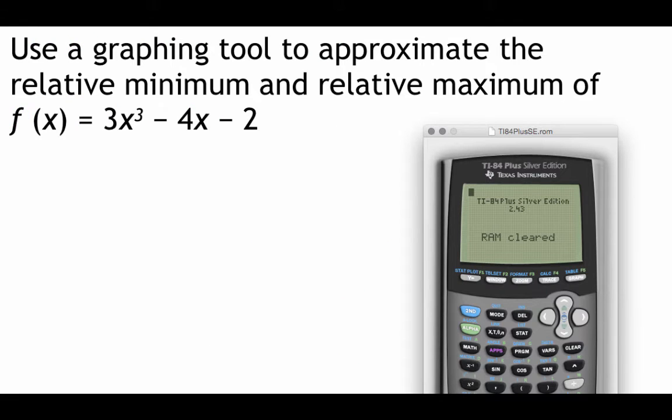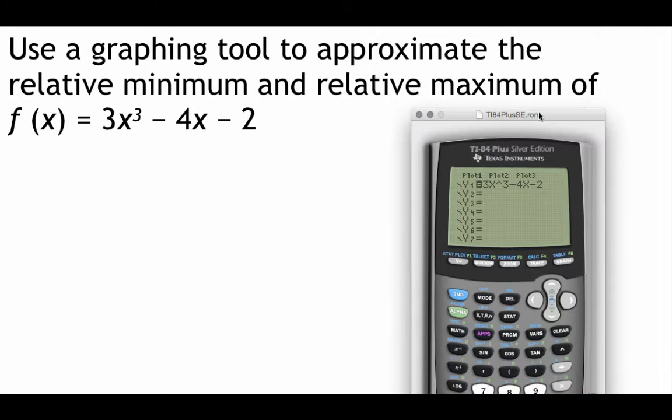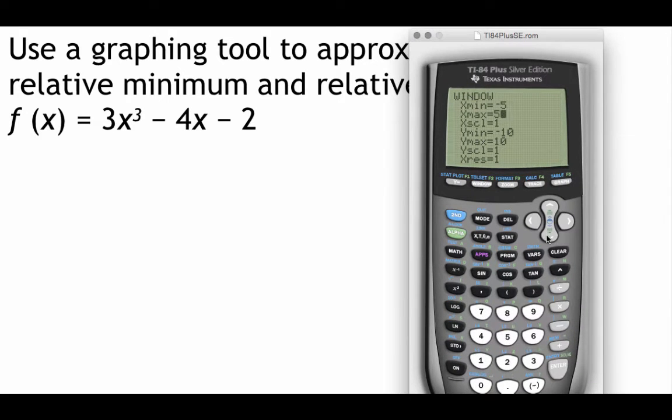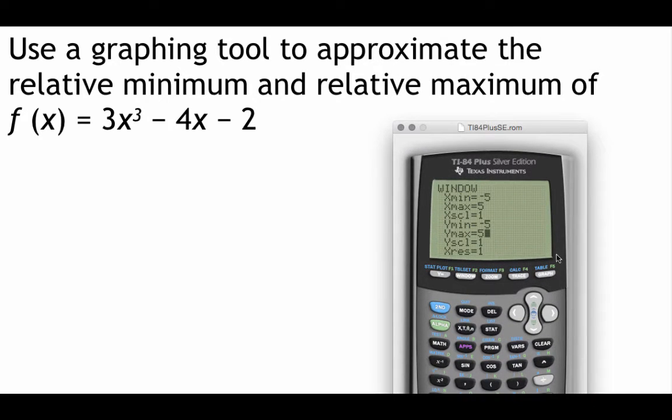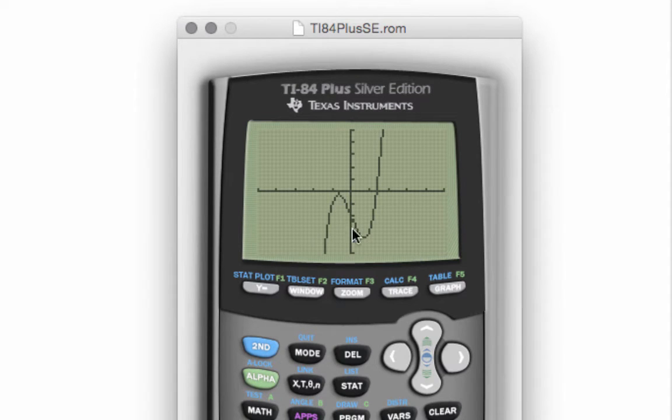We are going to use our calculators to help us graph out this function and then find its relative maximum and minimum values. So go ahead and hit your y equals button and then type in this function right here. I am also going to change the window on my graph just to give a better picture of what this thing is going to look like. And now I'm ready to graph. So here's the picture we should get when we graph this thing out. It's a cubic function, so it's got kind of this S-shaped curve to it. We're focusing on finding the relative maximum and minimum values. So we're looking at like the top of this peak right here and the bottom of this valley.